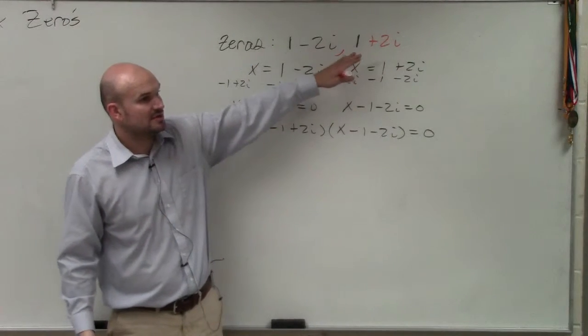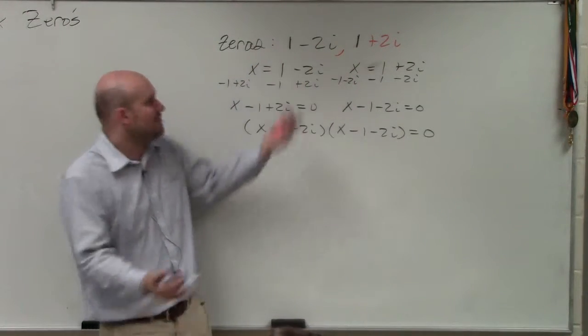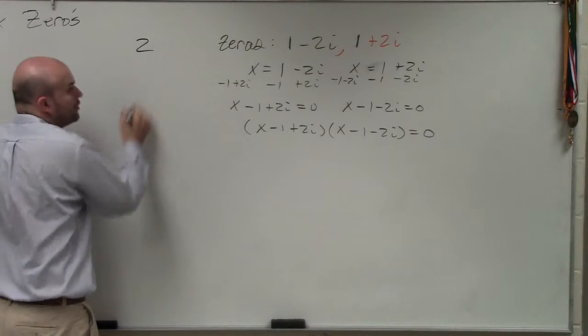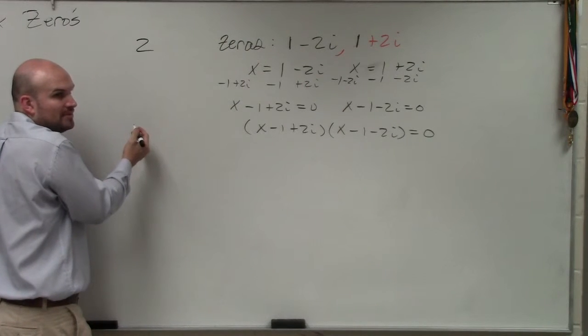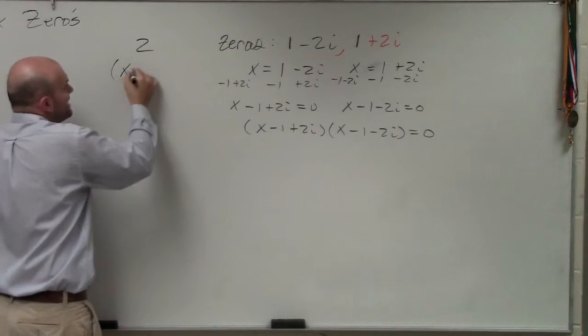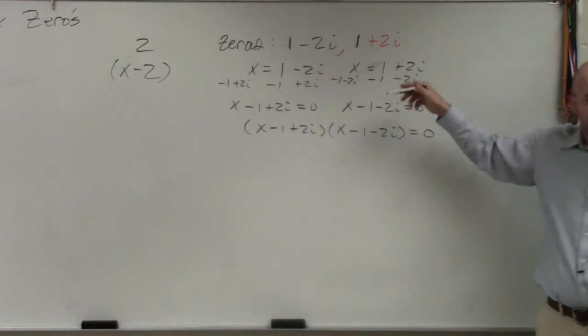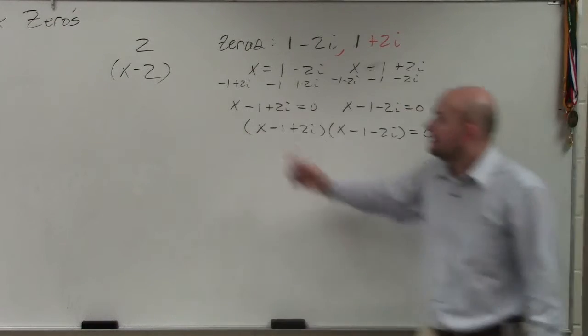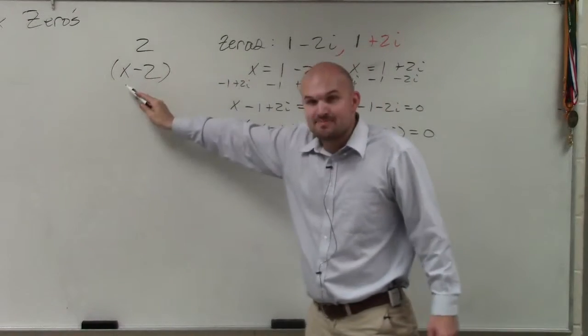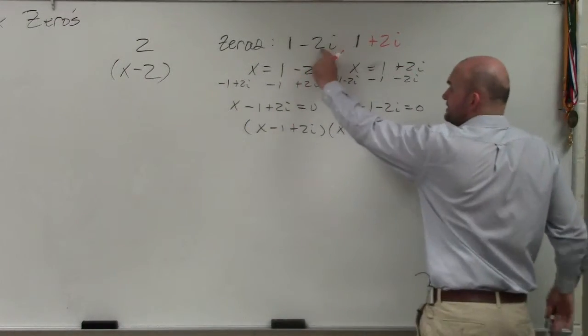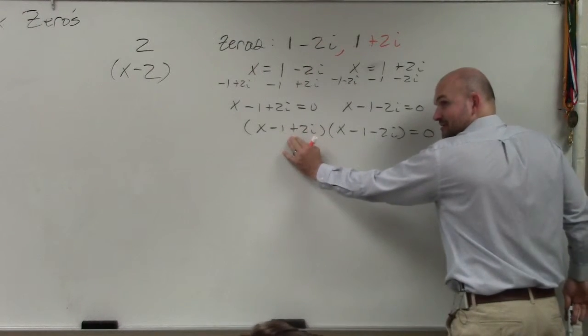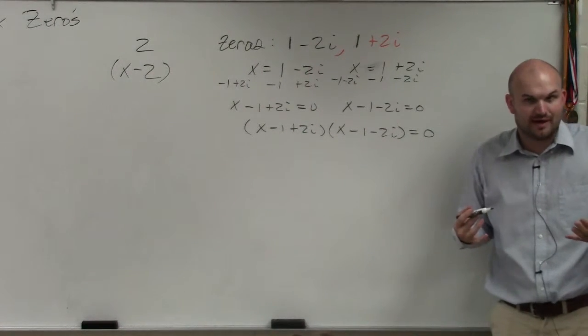So here's your zeros. Your zeros are basically the same thing. If I said 2 is a zero, what is the factored form? X minus 2. I'm doing the same thing. It's just I'm doing it with, it just looks a lot crazier. But it's the same thing. If 2 is the zero, that's my factor. If this is my zero, that's my factor. It's the same thing, it's just with these crazy multiple numbers.